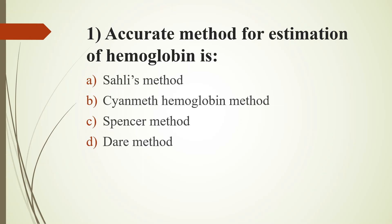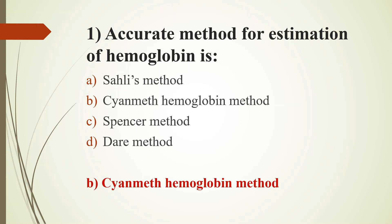Accurate method for estimation of hemoglobin is: Option A, Sahli's Method; Option B, Cyanmethemoglobin Method; Option C, Spencer Method; Option D, Dare Method. Answer is Option B, Cyanmethemoglobin Method. Why is Cyanmethemoglobin Method more accurate? The other methods are visual matching. This Cyanmethemoglobin Method uses photoelectric colorimetry for measurement.